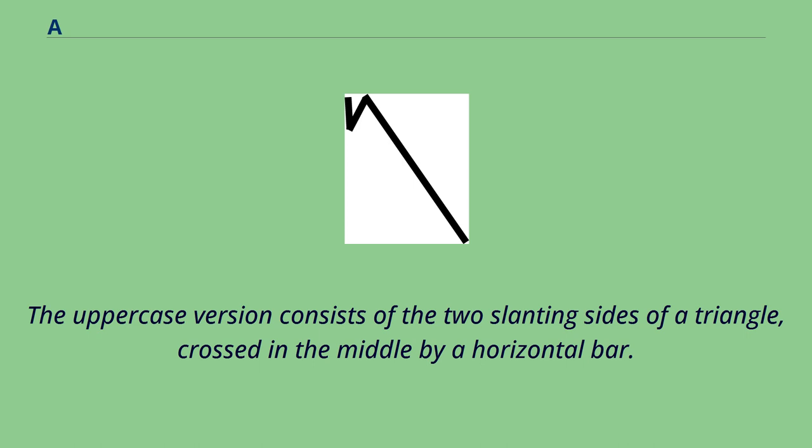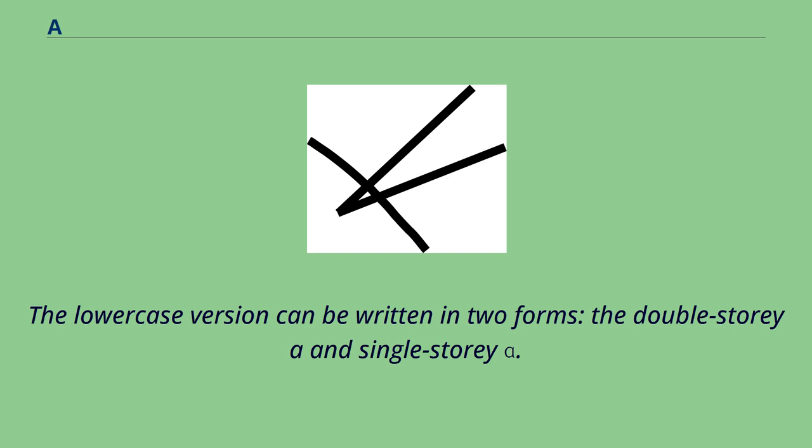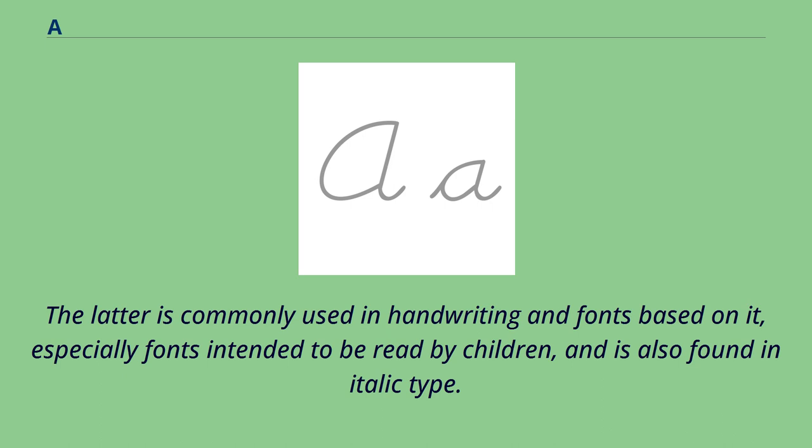The uppercase version consists of the two slanting sides of a triangle, crossed in the middle by a horizontal bar. The lowercase version can be written in two forms: the double-story A and single-story. The latter is commonly used in handwriting and fonts based on it, especially fonts intended to be read by children, and is also found in italic type.